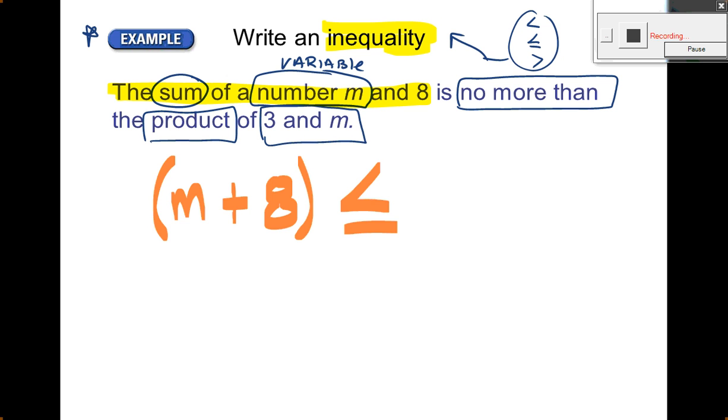And then the product of 3 and M. You got it. 3M. So there we go. This says the sum of a number M and 8 is no more than the product of 3 and M. Why is it strictly? Why is it less than or equal to? No more than. Right? Could be equal to. As long as it's not more than that. Could be less than, but it just can't go above that. Just can't go above.